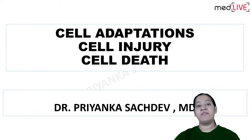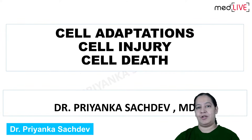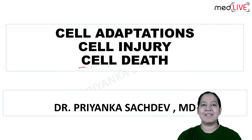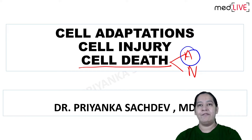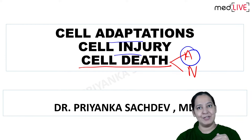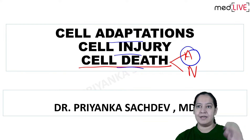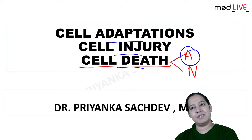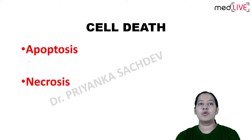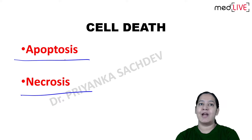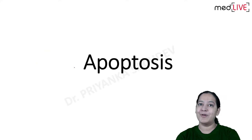Today I am here to explain a very important topic from general pathology: cell death. Cell deaths are of two types - apoptosis and necrosis. In this particular lecture, I am going to talk about apoptosis, a very important topic. We know there are three processes in continuity: first cell adaptations, then cell injury, then cell death.